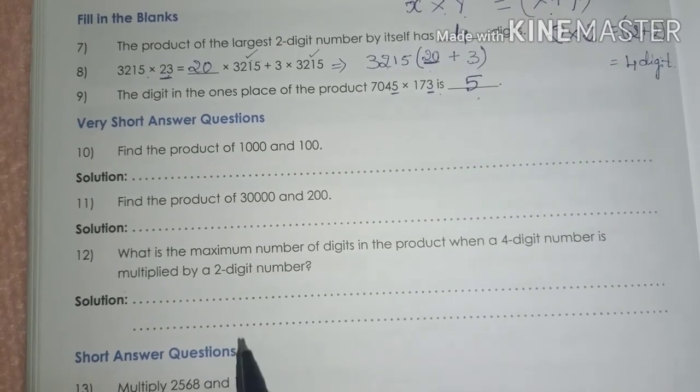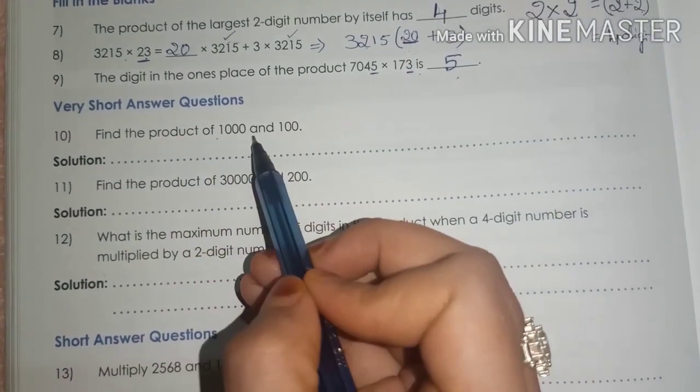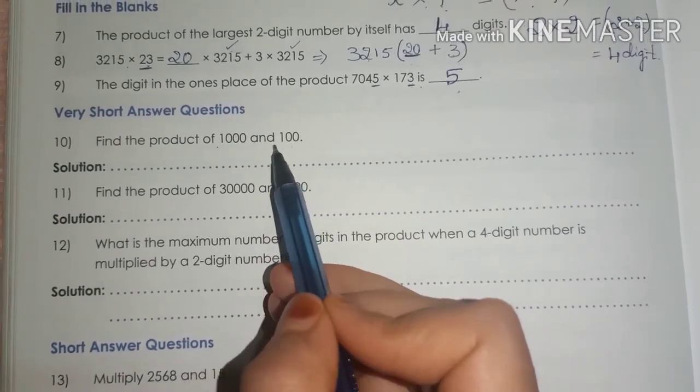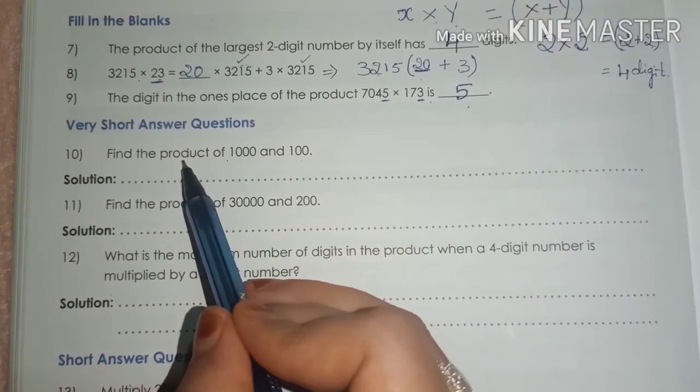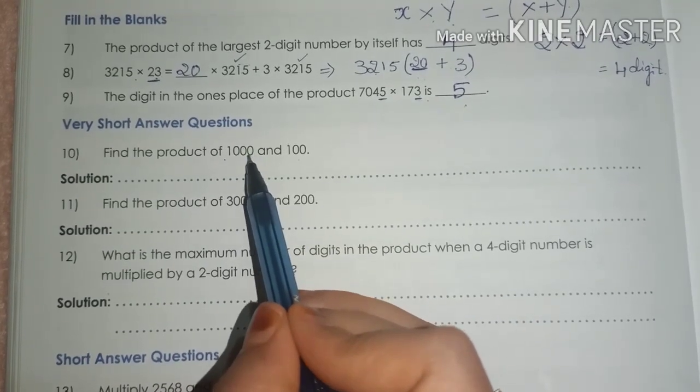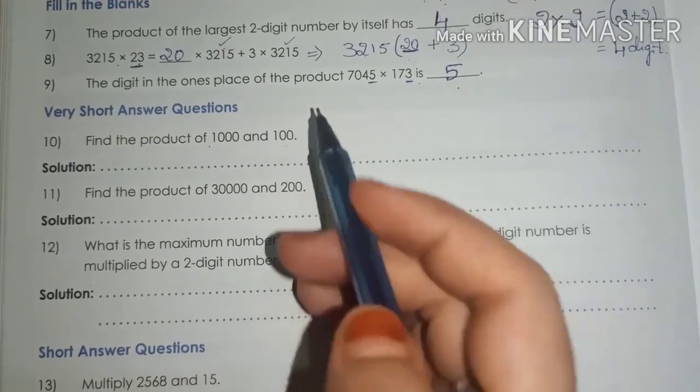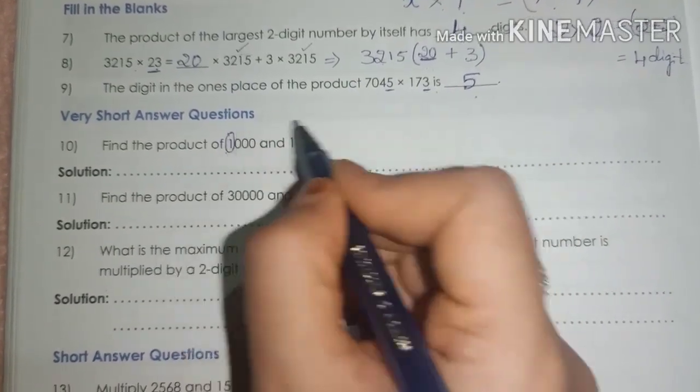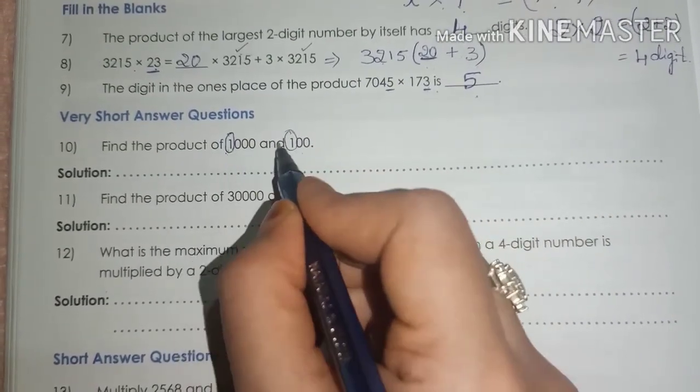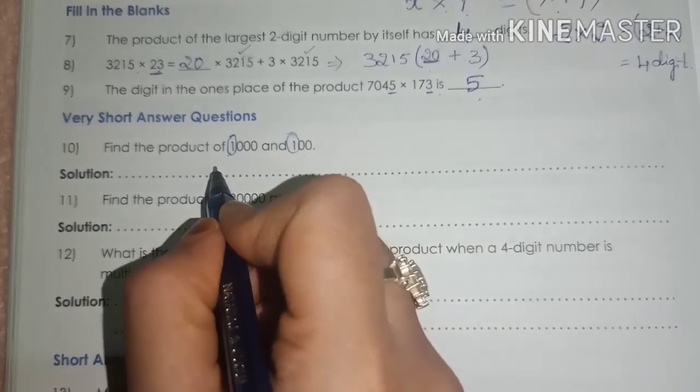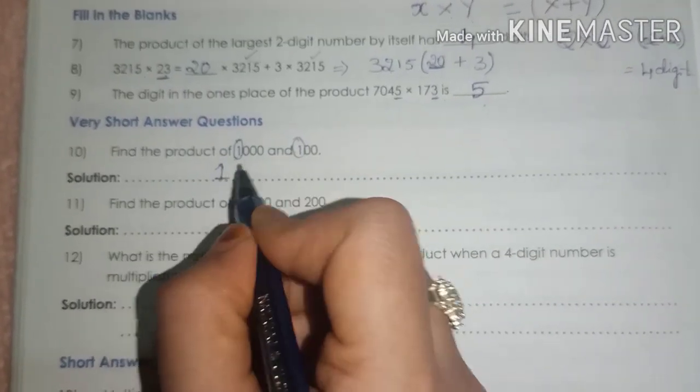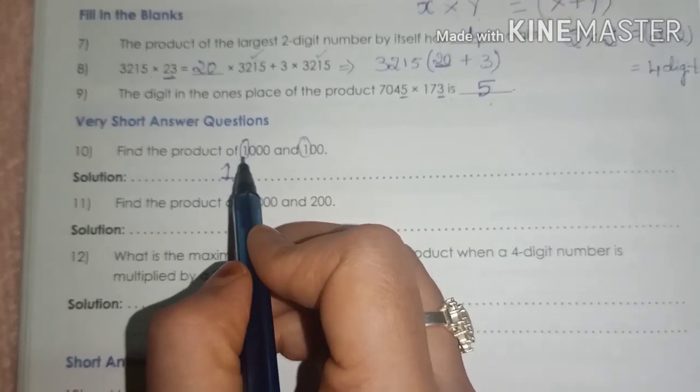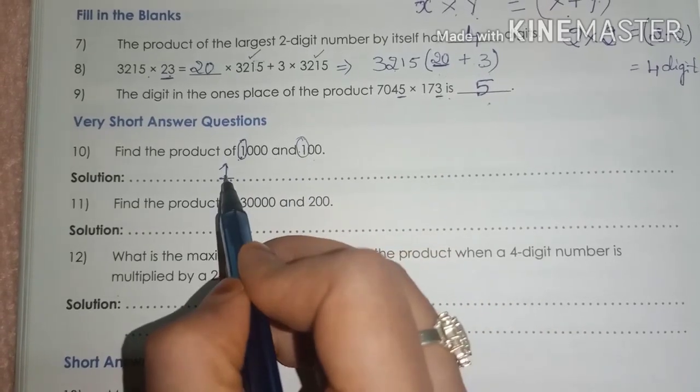Come to question number 10. Find the product of 1000 and 100. Dear children, this is very simple question. When the question is asked in the form of multiples of 10, then it is very easy. Just first multiply the numbers. So, 1, one's a 1. Just multiply the first digit. That is highest place value number 1 and 1. 1, one's a 1.